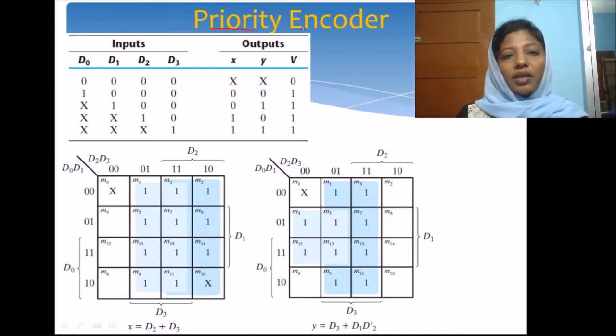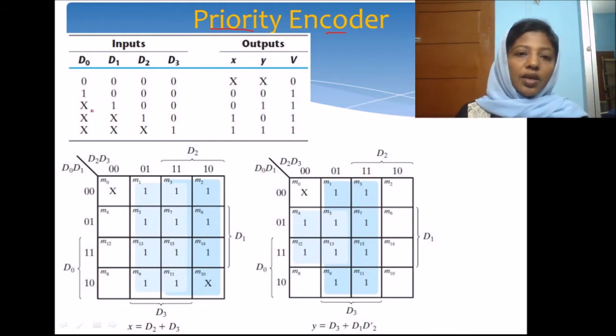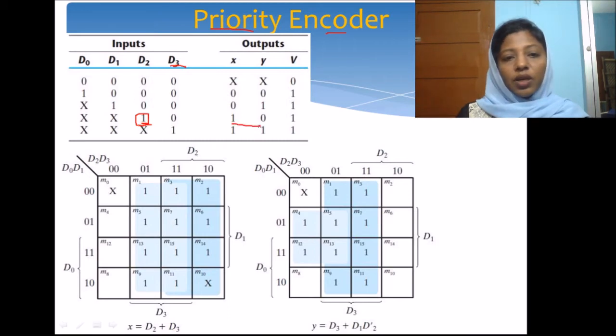Thus we have the priority encoder. We can give the priority to the input. Say for example, here we have given the priority to the higher order bits, that is if d2 is 1 irrespective of the value of d0 and d1, even if d1 is 1 and d0 is 1, we are going to give the priority only to d2. That means that we will generate only 1 0 as the output. We are going to ignore the lower order bits.